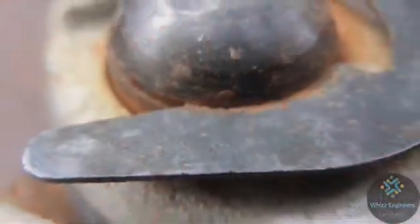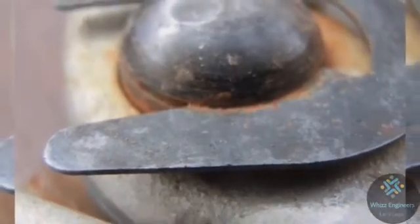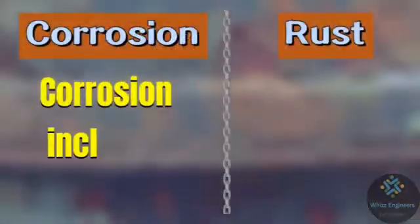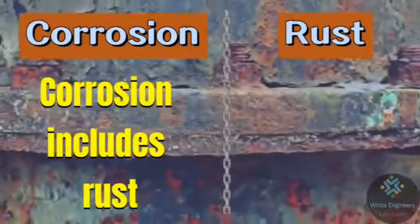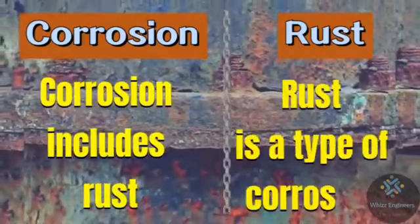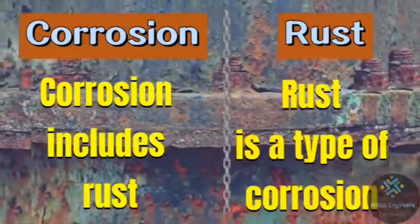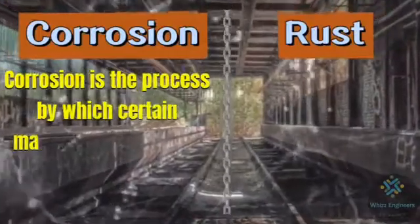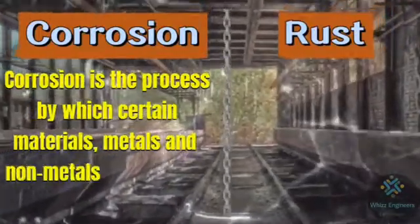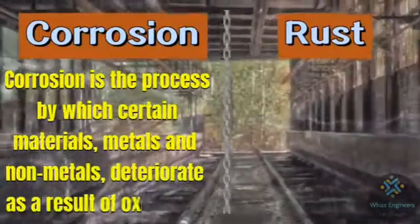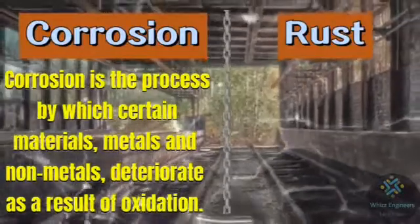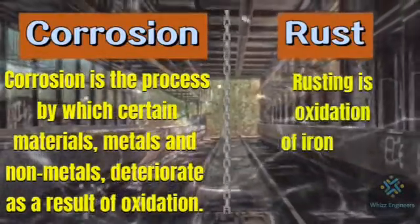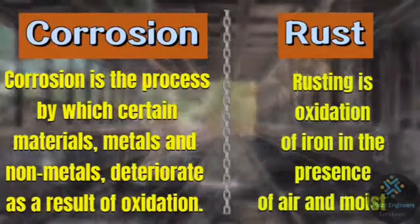Let us see the other differences between corrosion and rust. Corrosion includes rust, and rust is a type of corrosion. Corrosion is the process by which certain materials — metals and non-metals — deteriorate as a result of oxidation. Rusting is the oxidation of iron in the presence of air and moisture.